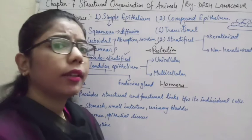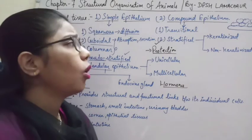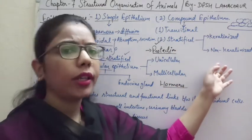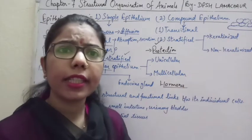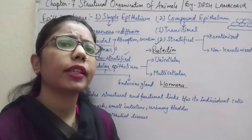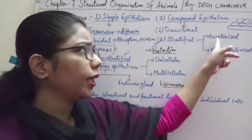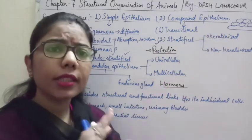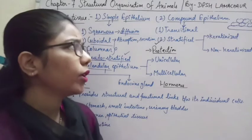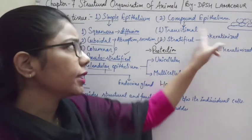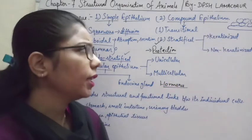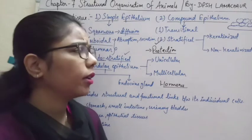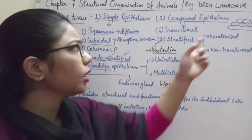Stratified epithelium can be of two types: keratinized and non-keratinized. In keratinized stratified epithelium, keratin is present which provides more protection. This type is found in the skin.